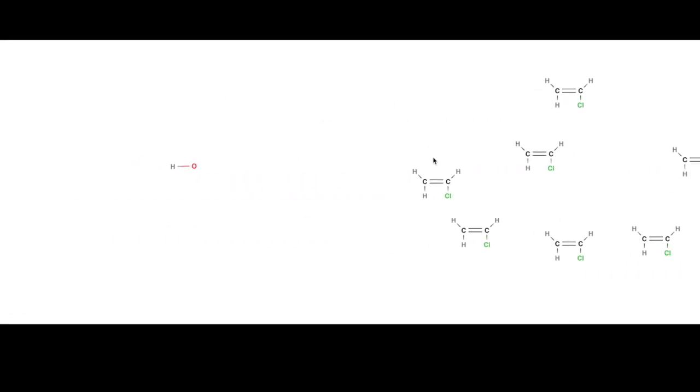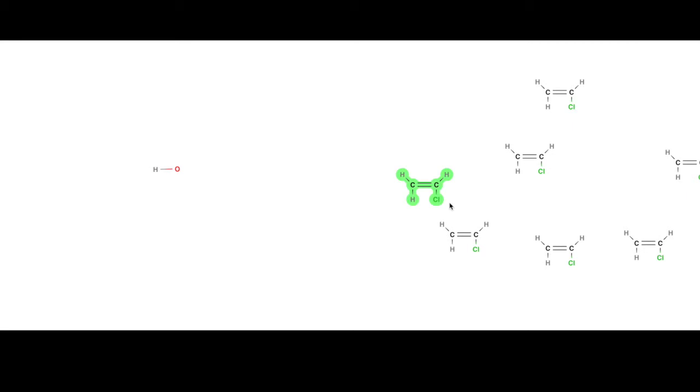These radicals can open up the double bond of a chloroethene molecule, initiating the reaction. This forms a free radical on the other side of the chloroethene molecule because this carbon atom now has an unpaired outer shell electron, making it very reactive.